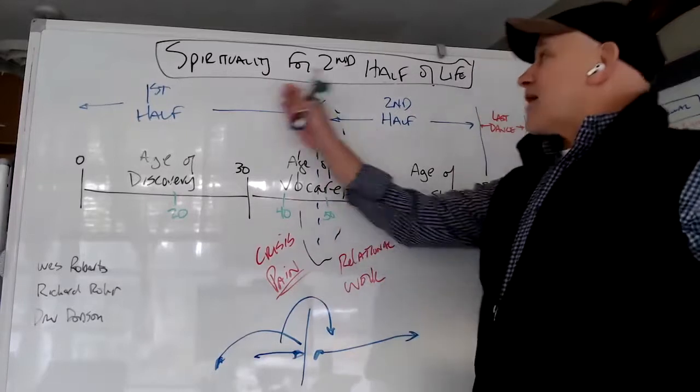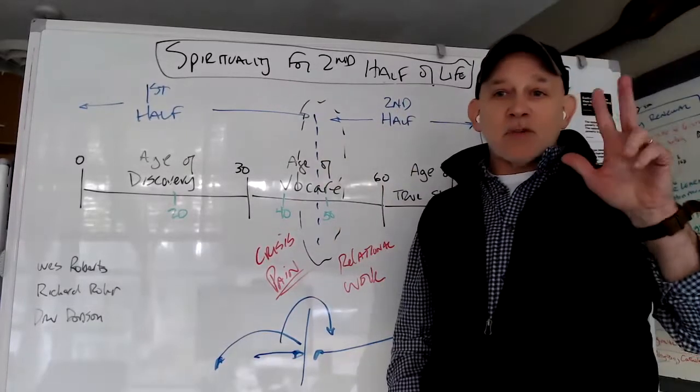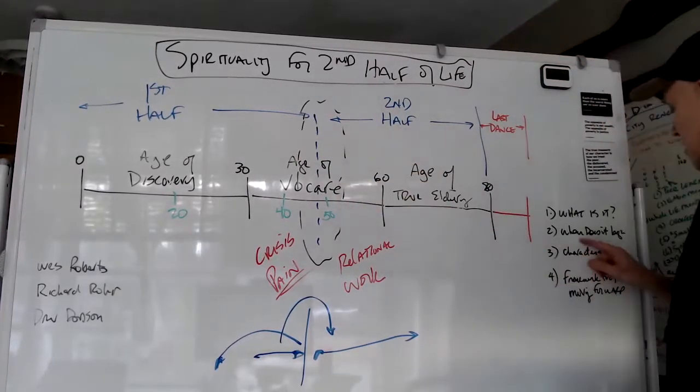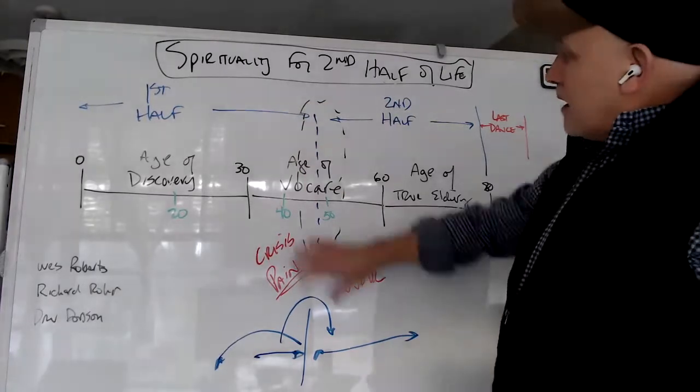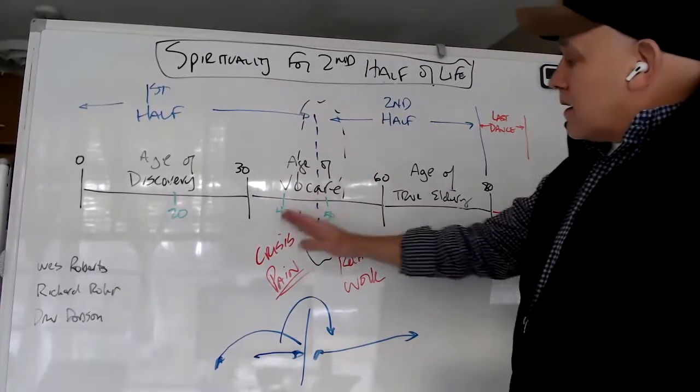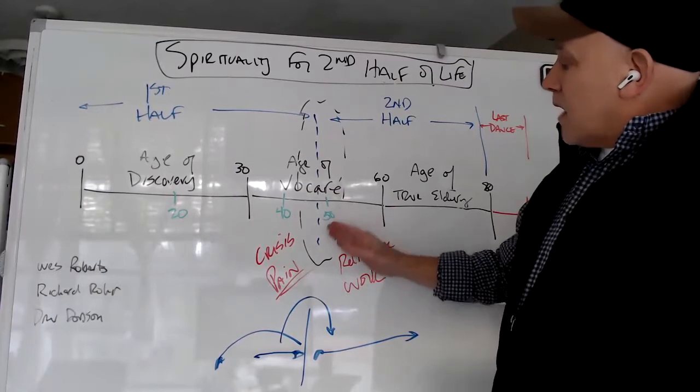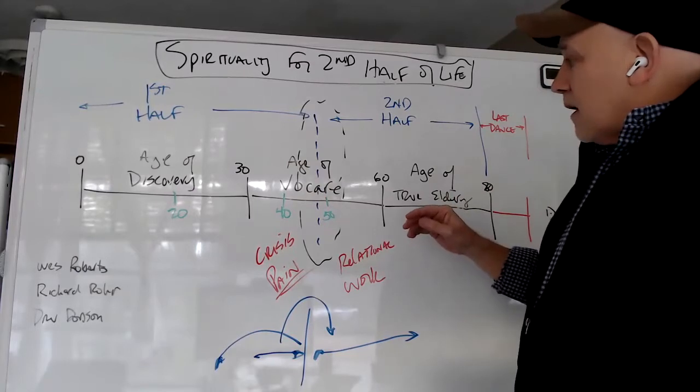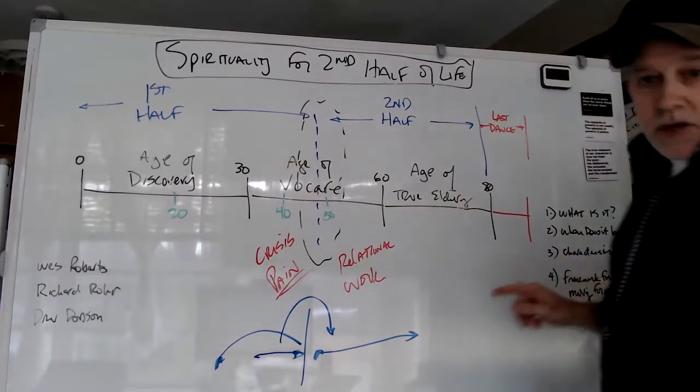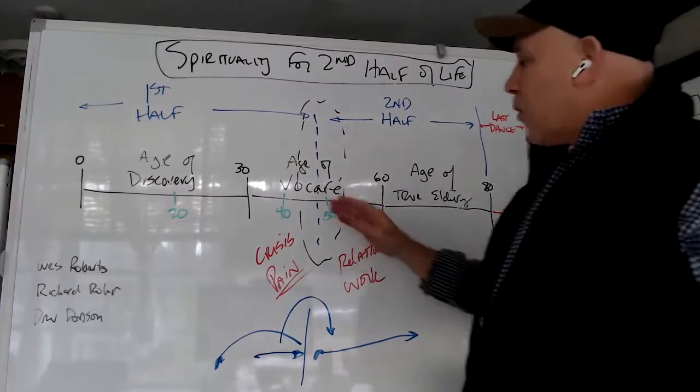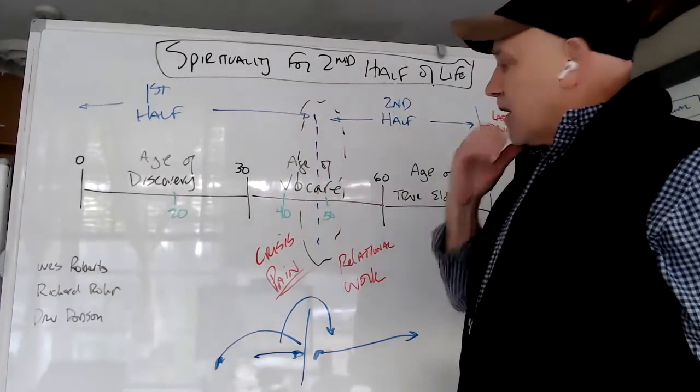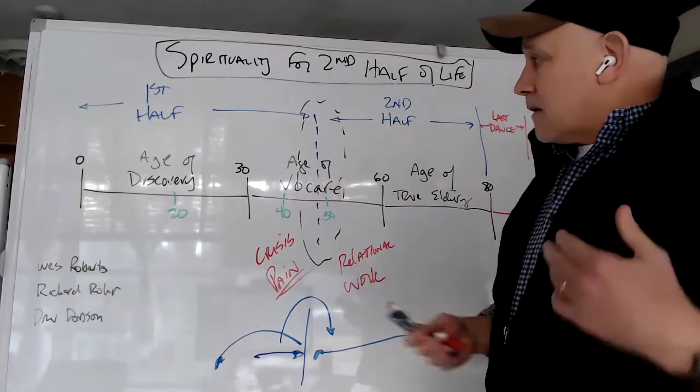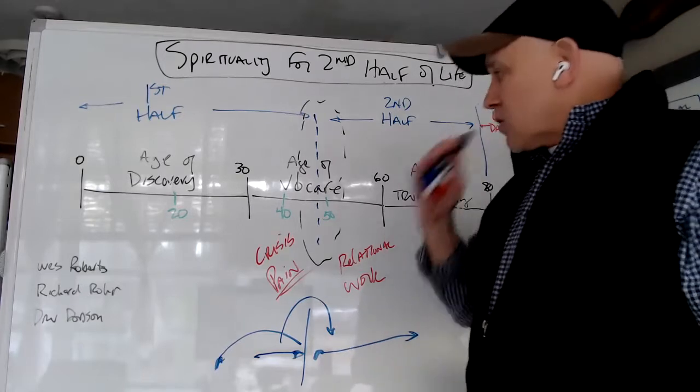Welcome again to Spirituality for the Second Half of Life, this is episode three. In the first episode I explained my little chart here about when this begins. I walked through some of the crises that create pain during the age of our vocation. Now let's talk about the characteristics of what begins to happen in us internally that lets us know we're kind of there.